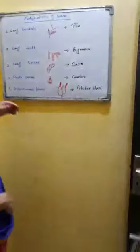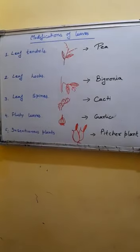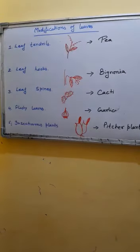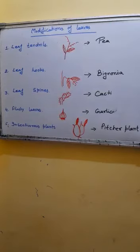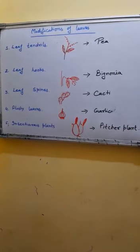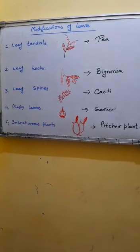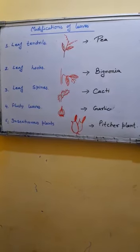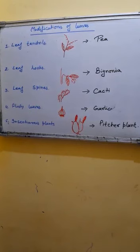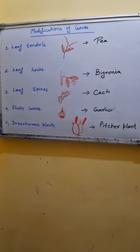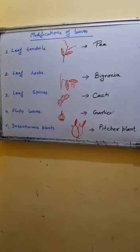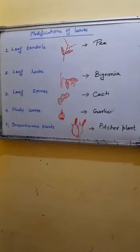The very first modification is where leaf forms tendrils. Leaf tendrils are spirally coil-like structures present in the plant. They are found in pea plants and basically tendrils are there to provide support to plants having weak stems. It helps the plant to climb with the help of tendrils. Tendrils are found in creepers and climbers where these leaf modifications provide support to the plant.